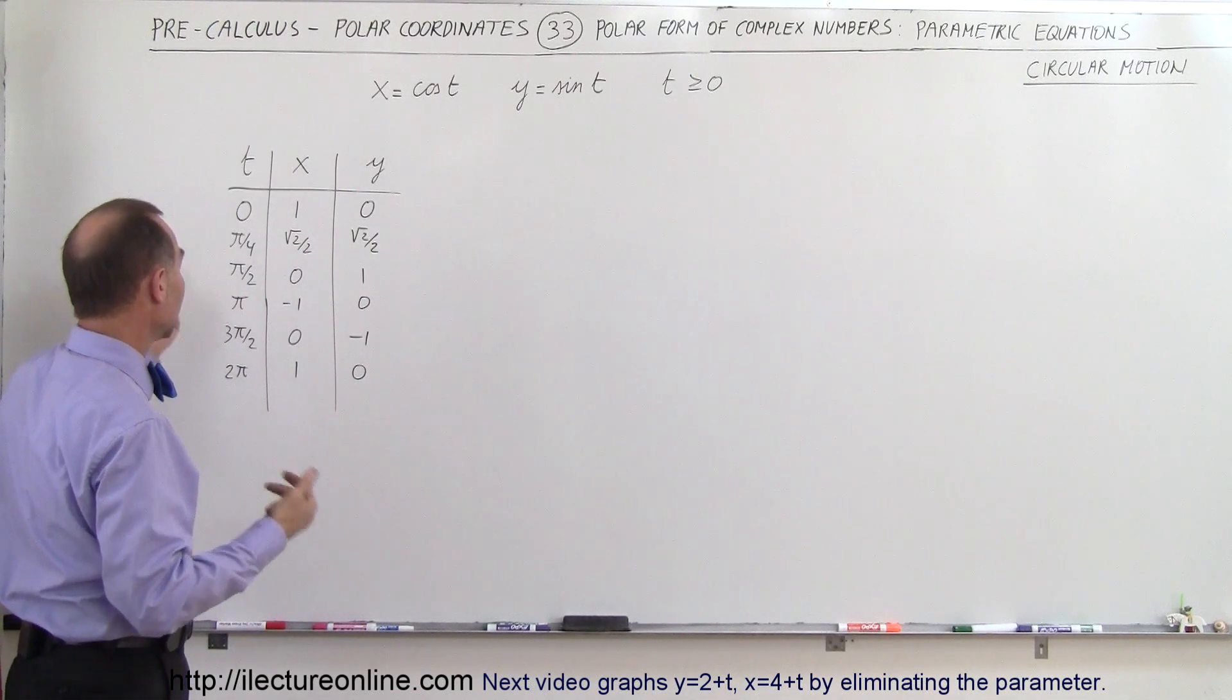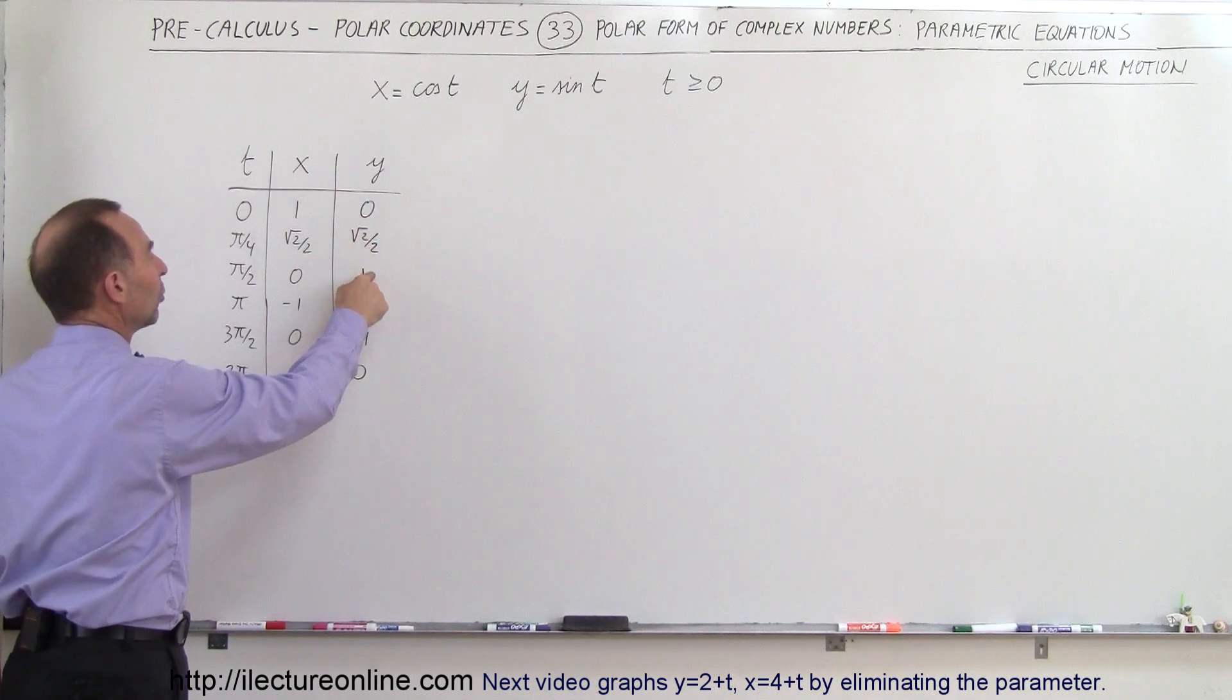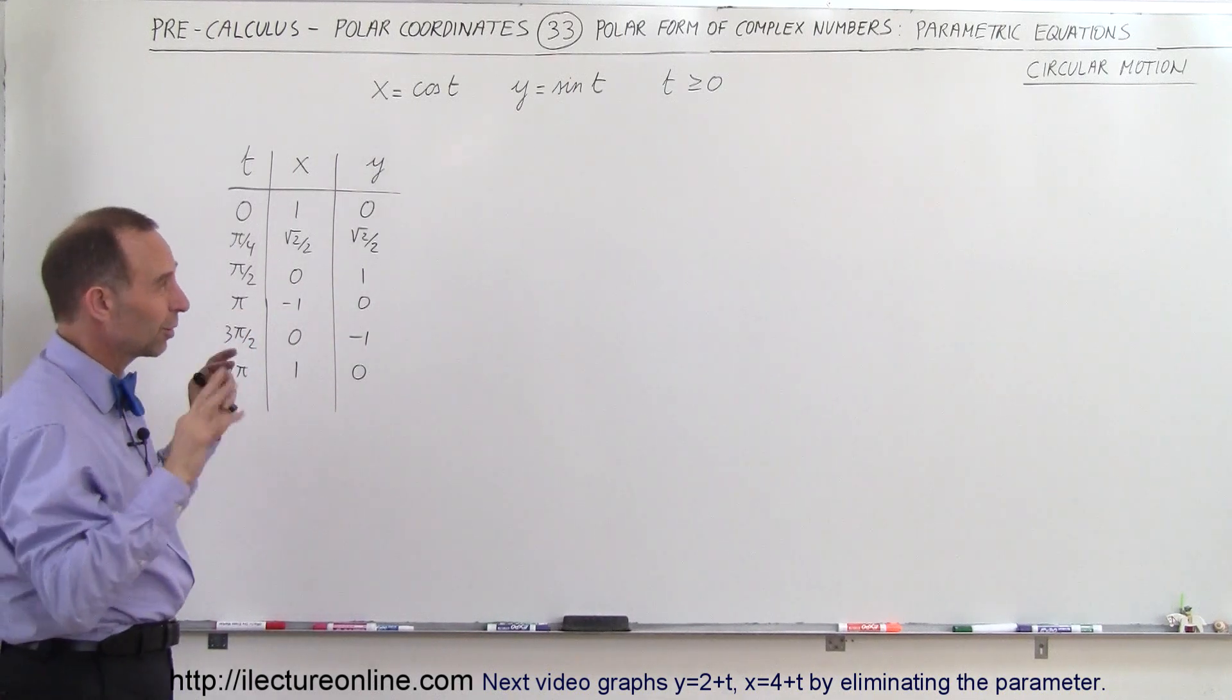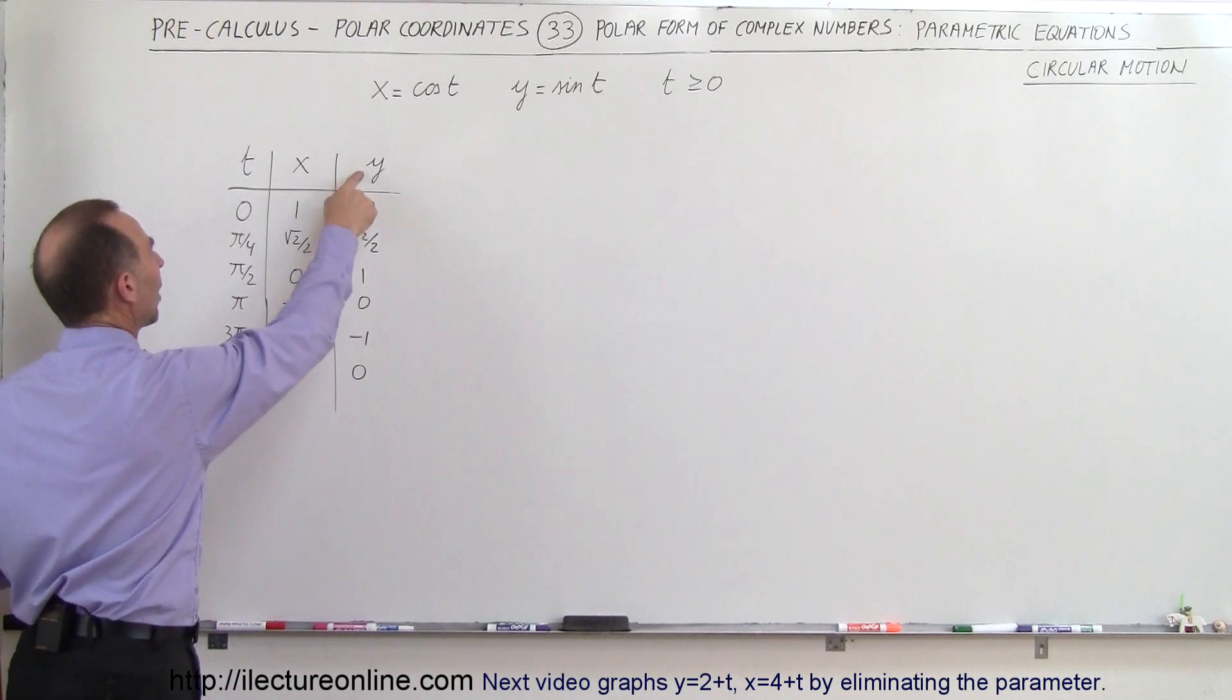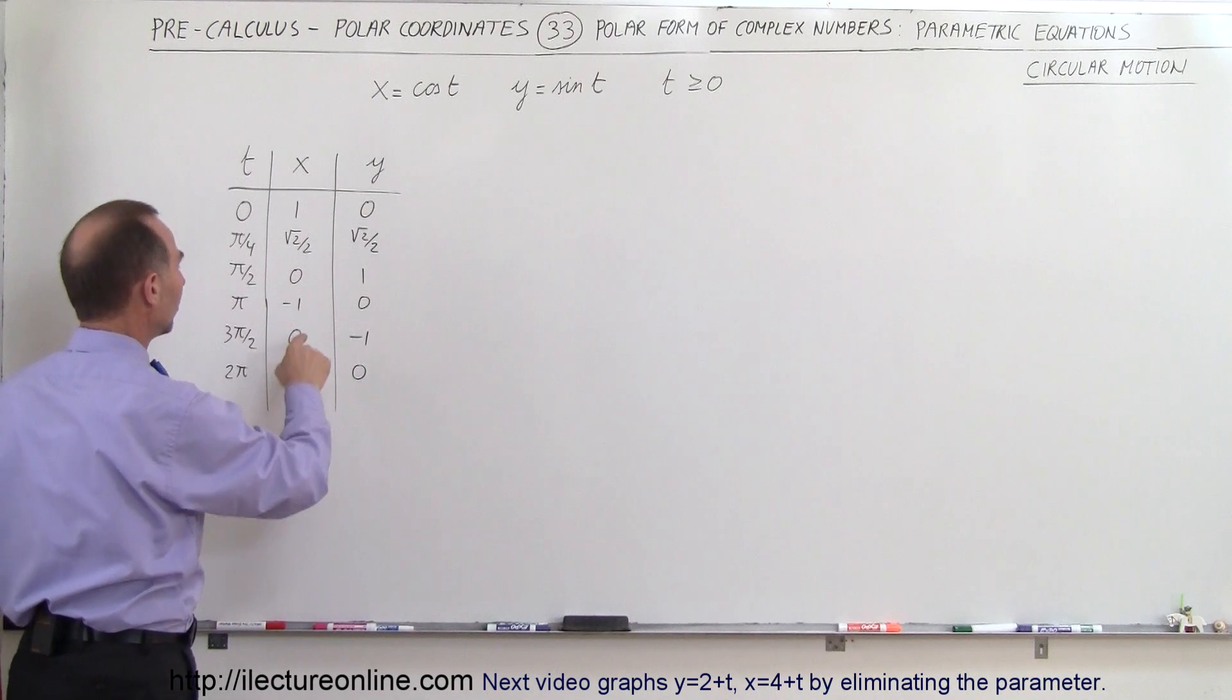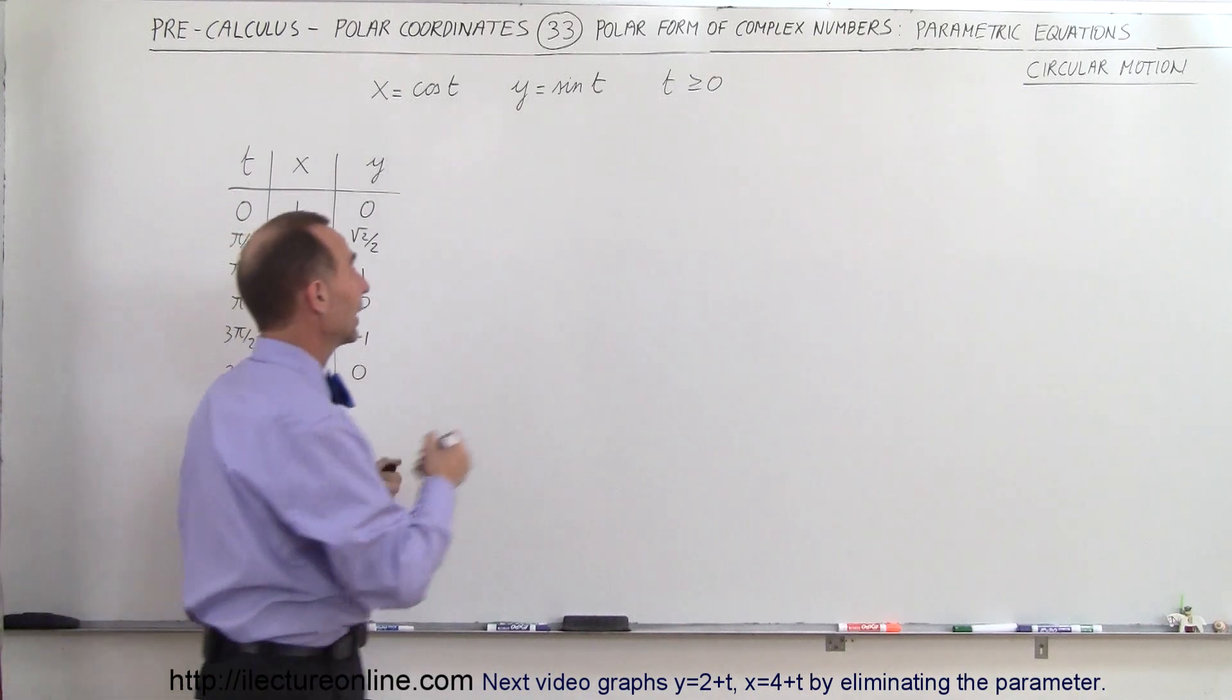When it's π over 2 or 90 degrees, x is going to be equal to 0, y is going to be equal to 1. When it equals π, these are radians (radians are non-units so we can assume they're probably seconds), x will be negative 1, y will be 0. At 3π over 2, which is down at the bottom of the circle, x will be 0, y is negative 1. When we get to 2π again, we'll get 1 and 0.